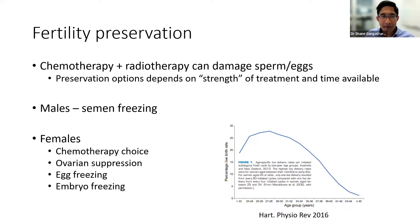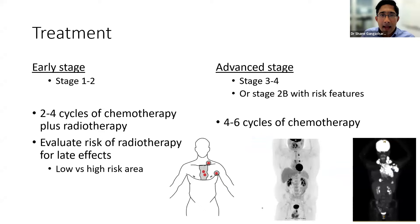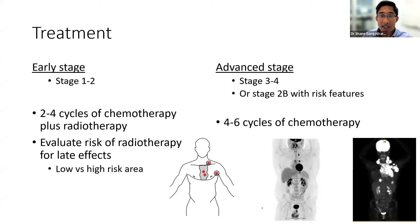Now we're coming to the treatment stage. Treatment for Hodgkin lymphoma depends on the stage — we divide it into two groups: early stage (stage 1 and 2) and advanced stage (stage 3 and 4, or stage 2B with risk factors such as B-type symptoms or disease going outside the lymph nodes). For early stage, we try to give limited chemotherapy — two to four cycles — and then radiotherapy.